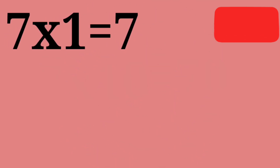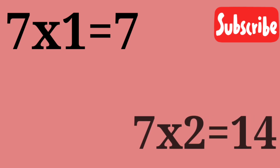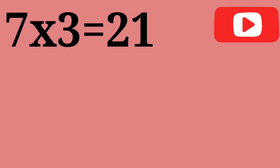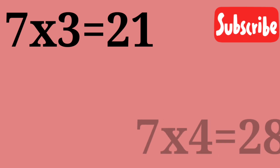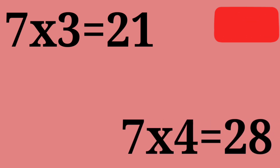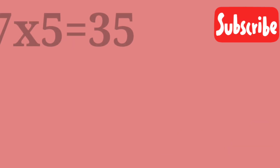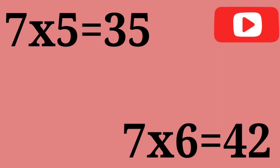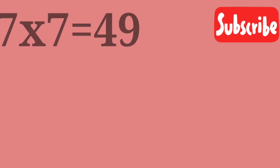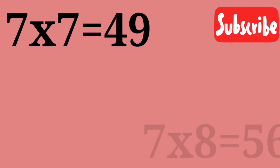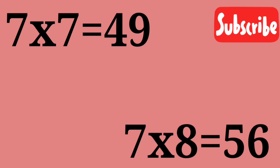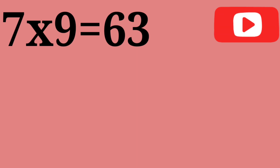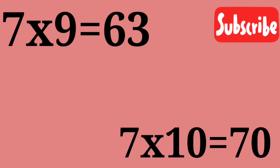7 ones are 7. 7 twos are 14. 7 threes are 21. 7 fours are 28. 7 fives are 35. 7 sixes are 42. 7 sevens are 49. 7 eights are 56. 7 nines are 63. 7 tens are 70.